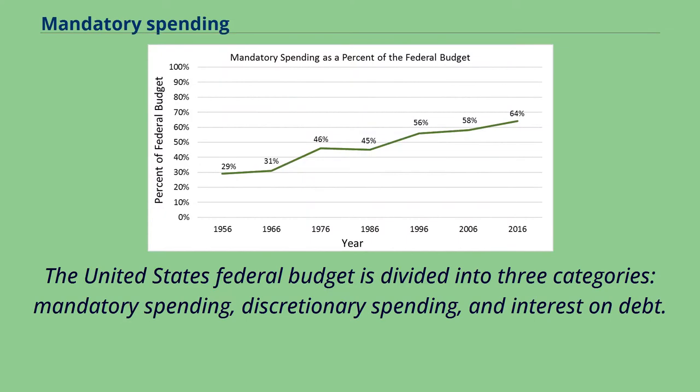The United States federal budget is divided into three categories: mandatory spending, discretionary spending, and interest on debt.